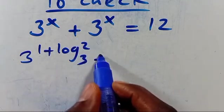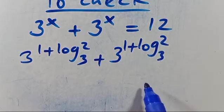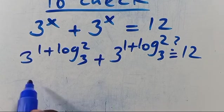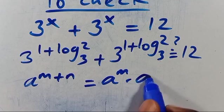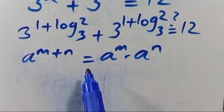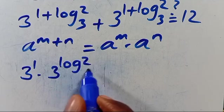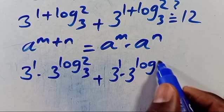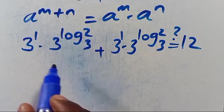We substitute: 3 to the power of (1 plus log base 3 of 2) plus 3 to the power of (1 plus log base 3 of 2). Recalling that a to the power of (m plus n) equals a to the power of m times a to the power of n, we apply this to get 3 to the power of 1 multiplied by 3 to the power of log base 3 of 2, plus 3 to the power of 1 multiplied by 3 to the power of log base 3 of 2, and this should give us 12.